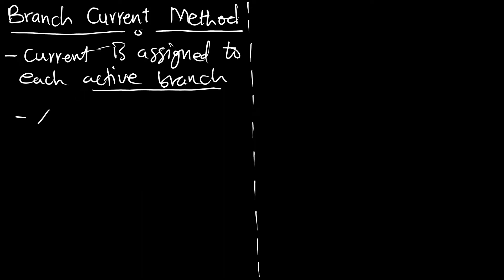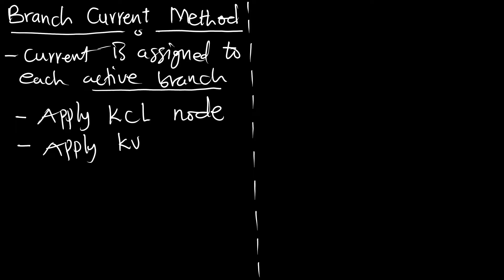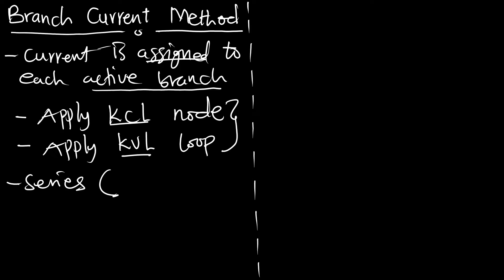Once we assign the current to the active branches, we apply KCL (Kirchhoff's Current Law) to the nodes and KVL (Kirchhoff's Voltage Law) to the loops. Applying KCL and KVL gives us a series of equations, which are then solved using simultaneous equations.